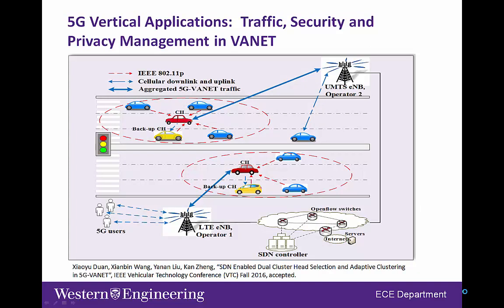Another example is the 5G-enabled vehicle area network. The anticipated self-driving vehicles would shoulder the burden of driving and set the driver onboard free. Consequently, supporting the growing in-vehicle data traffic will be extremely challenging in future 5G vehicle area networks, due to the high mobility of vehicles and the densified irregular distributions of on-road traffic, especially during rush hours.